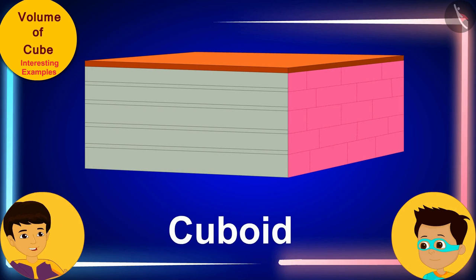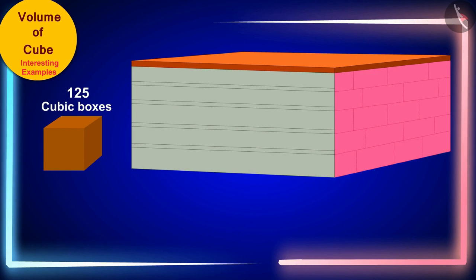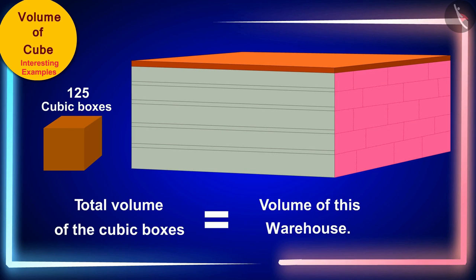Look Thomas! This warehouse is a cuboid. Therefore, the total volume of the cubic boxes we can keep in it will be equal to the volume of this warehouse.